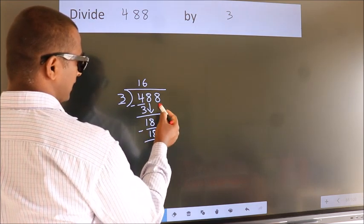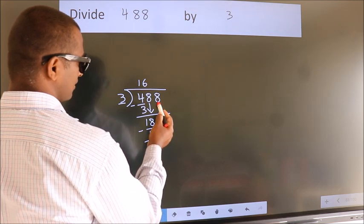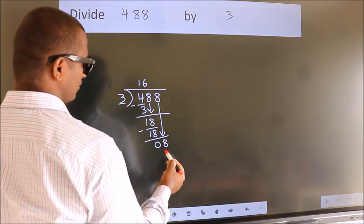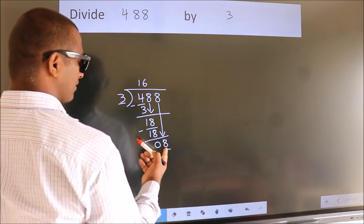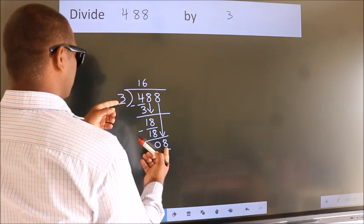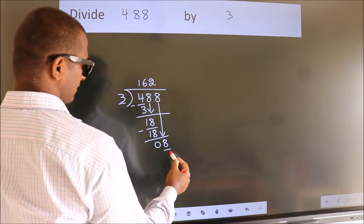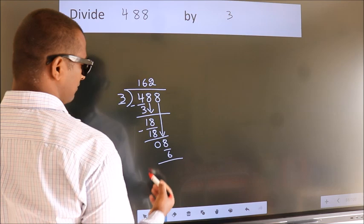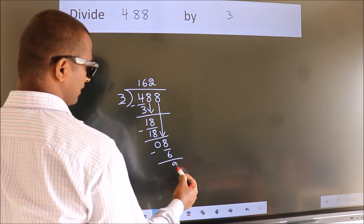After this, bring down the beside number. So, 8 down. So, 8. A number close to 8 in 3 table is 3, 2, 6. Now, we subtract. We get 2.